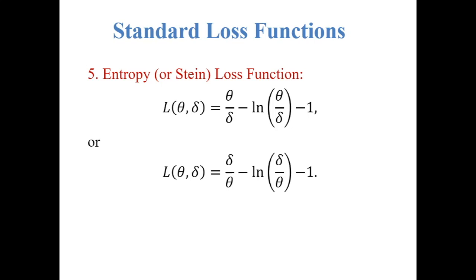The fifth loss function is the entropy or Stein loss function, defined as theta divided by delta minus the natural log of (theta divided by delta) minus 1. Sometimes it is reversed as delta divided by theta minus ln(delta divided by theta) minus 1. It is useful when theta is a scale parameter. It is also an asymmetric loss function and provides different penalties for overestimation or underestimation of theta.